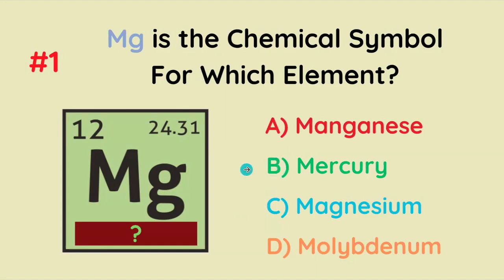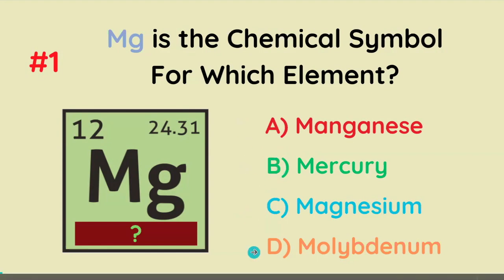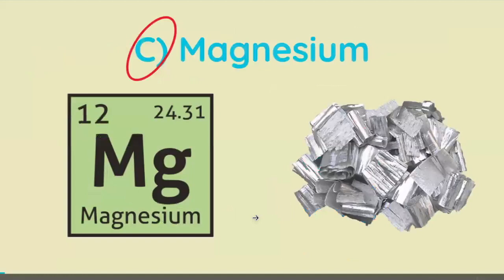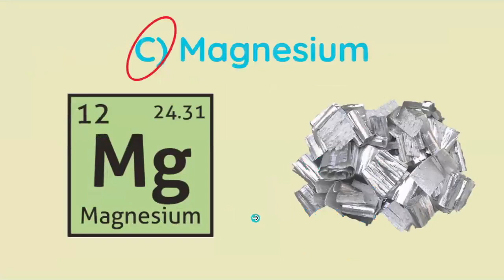Mg is the chemical symbol for which element? Manganese, Mercury, Magnesium, or Molybdenum? The correct answer is Magnesium.